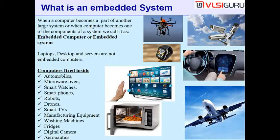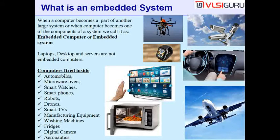Automobiles, luxury buses like Volvos, microwave ovens, smartwatches, smart TVs, drones, aeroplanes, rockets, manufacturing equipment, and digital cameras all have computers inside — but we don't get to see those computers. They are fixed somewhere inside, completely transparent to us. Such computers fixed inside another device are called embedded computers — they are embedded inside something else.